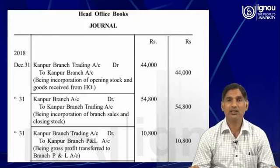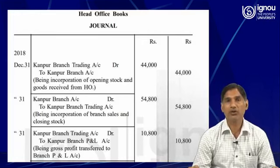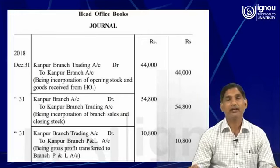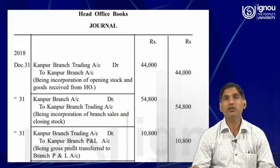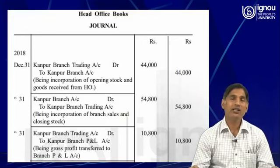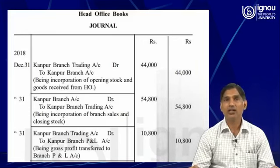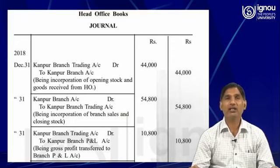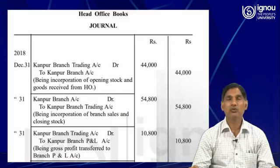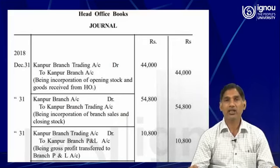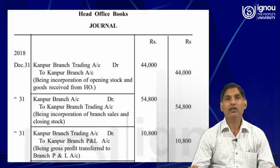Because these are the transactions which pertain to the profit and loss account instead of the trading account. As far as the trading account is concerned, items which pertain to goods are recorded either in the debit side or the credit side. But in the profit and loss account, indirect expenses and losses are recorded on the debit side, and revenues and gains are recorded on the credit side.